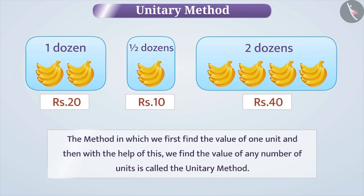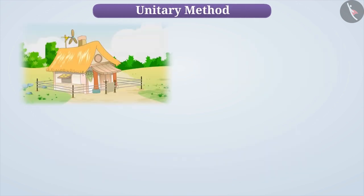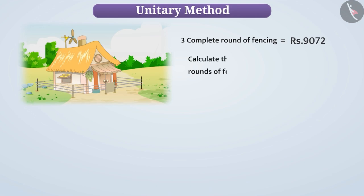Let us understand this with an example. Raju has fenced his house with three full rounds of fencing. It cost him Rs. 9072. If he wants to build a fence with five rounds, how much is it going to cost him?